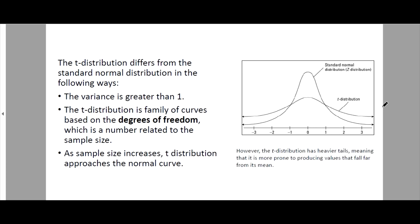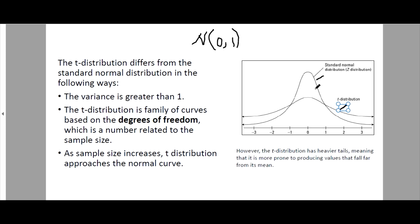The T-distribution differs from the standard normal distribution in the following ways. First, the variance is greater than 1. Recall that for the standard normal distribution, the mean is 0 and the variance and standard deviation are 1. But in the T-distribution, the variance is greater than 1. Second, the T-distribution is a family of curves based on degrees of freedom, which is a number related to sample size. Third, as the sample size increases, the T-distribution approaches the normal curve.